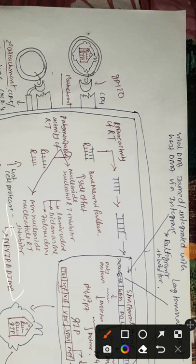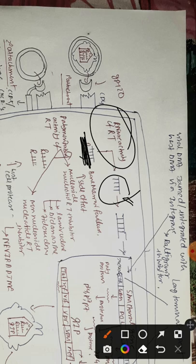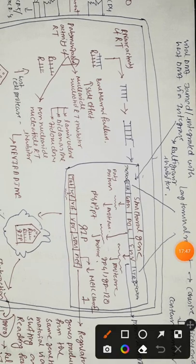Nevirapine inactivates or inhibits the polymerization activity. After polymerization, the RNase H activity of reverse transcriptase degrades the RNA part of the RNA-DNA hybrid, resulting in a single-stranded DNA molecule. This is then converted to double-stranded DNA and integrated inside the host chromosome via integrase. Integrase can be inhibited by raltegravir.